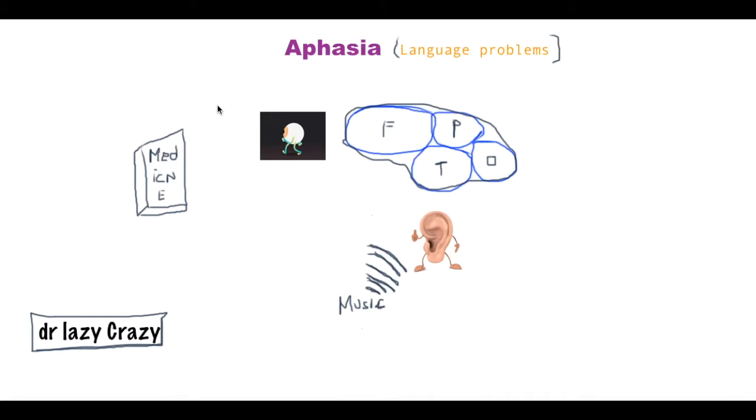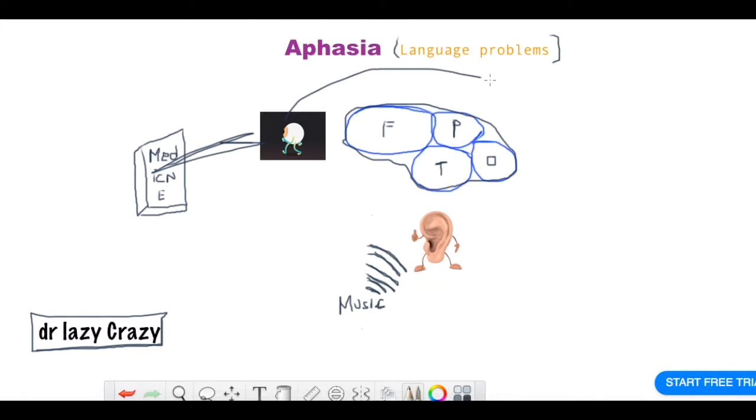So what happens? First of all, your eyes get coordinated. You see there's a writing, like a script. So your eyes read it basically, and they send signals to the visual cortex which is in the occipital lobe.